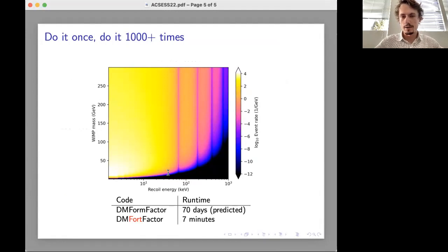So now we can test a greater range of competing models and target materials with great speed and efficiency. And in future work we will use this code to explore how the uncertainty originating from the nuclear physics propagates into the uncertainty in these event rate calculations.